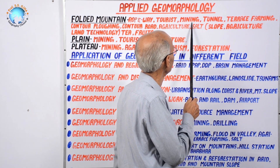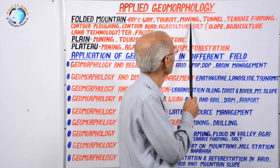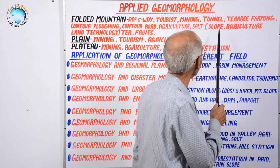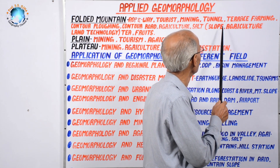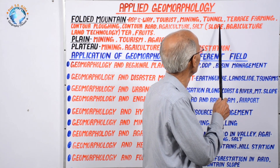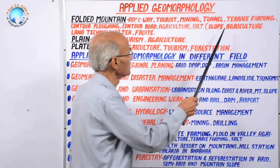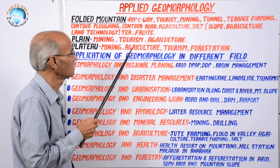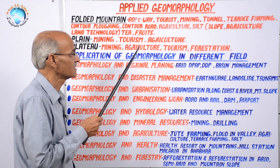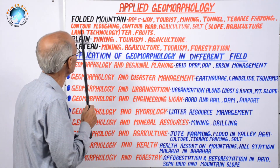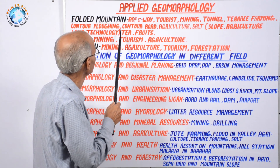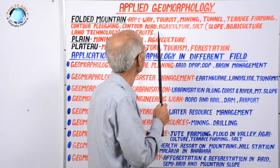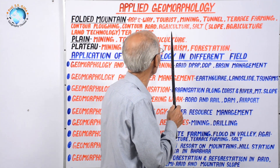Second application in mountainous terrain is mining. In folded soft sedimentary structures, coal, limestone, and other minerals are found, mined keeping slope variables and geomorphic factors in mind. Tunnel formation is also a need of the present day — for example, the Jawahar Tunnel in Jammu and Kashmir. Terrace farming is practiced over folded mountain structures where there is a layer of soil, requiring correct geomorphological knowledge.